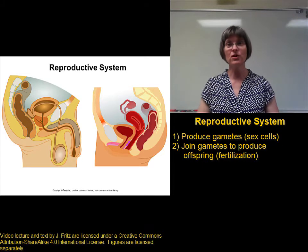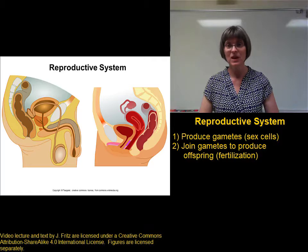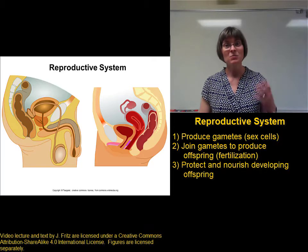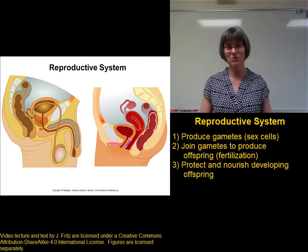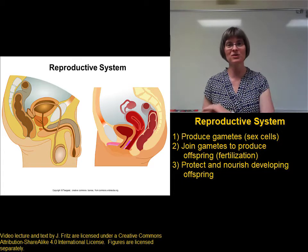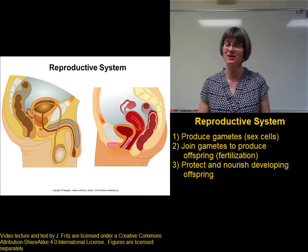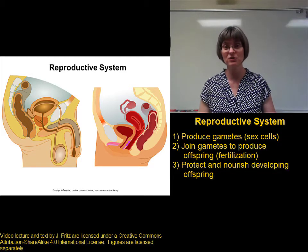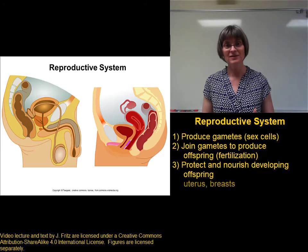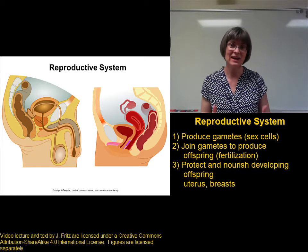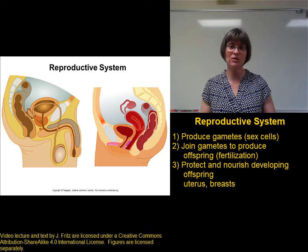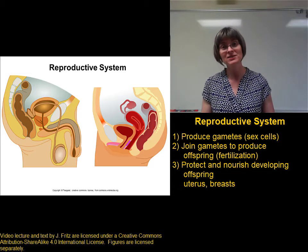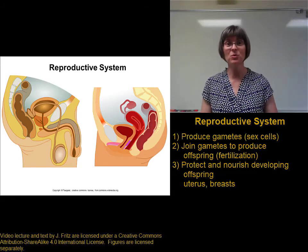This brings us to the third function of the reproductive system, which is to protect and to nourish the developing offspring. The male reproductive system does not have a role in this process — once the sperm is delivered, the male reproductive system is done. The female reproductive system has important structures for this, including the uterus that protects, contains, and helps nourish the developing offspring inside the female reproductive tract, and the breasts that produce milk to nourish the offspring after it's born.